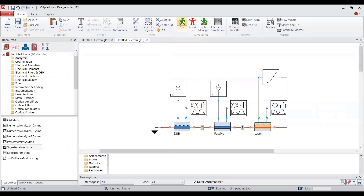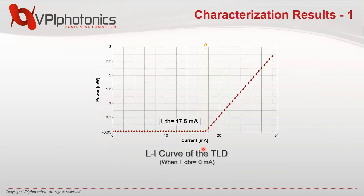I have already produced the LI curve of the laser. Looking at the LI curve, we can see that the laser has a threshold current value at around 17.5 mA, and you can also see the LI slope. The threshold current value can be different depending on your laser's DBR tuning. In this case the DBR bias current was set to 0 mA. You can actually tune the laser and investigate the change in threshold current value with tuning — this will be a nice homework for you.